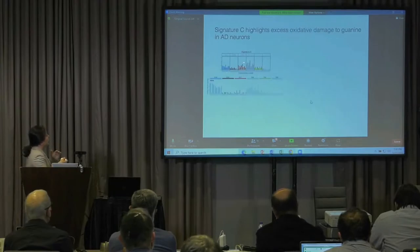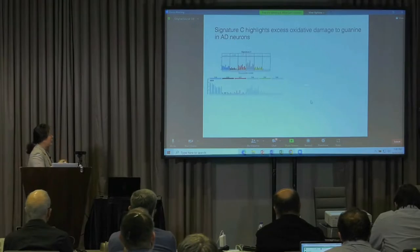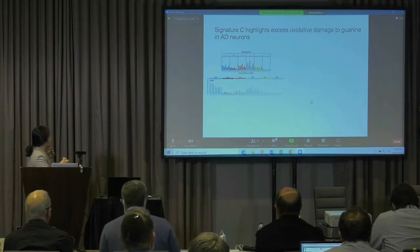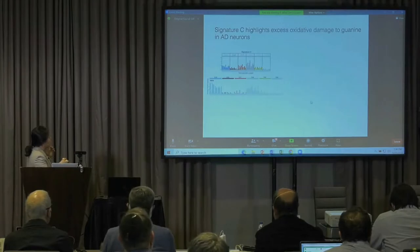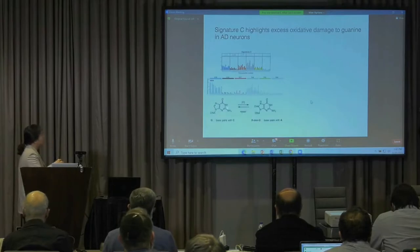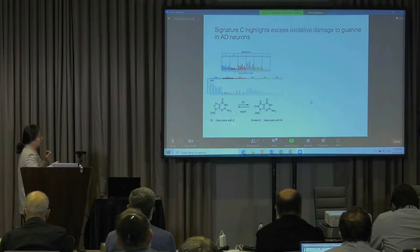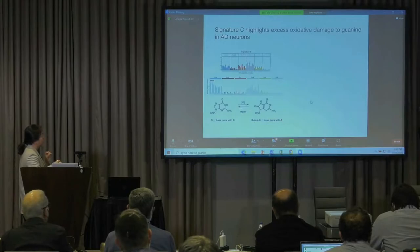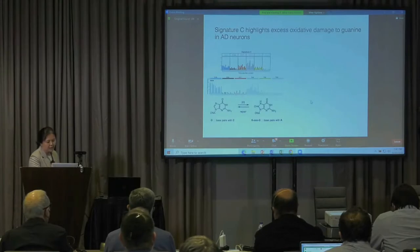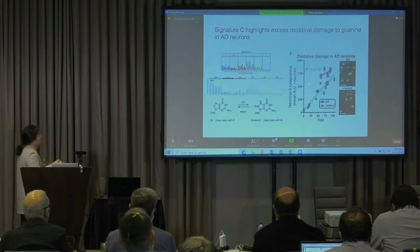Comparing Signature C spectra to recently established cancer signatures, we identified SBS-8 from the COSMIC database as the most similar, showing a very distinct C-to-A enrichment. C-to-A mutations can occur when guanine is oxidized — 8-oxoguanine typically base-pairs with A when there is no proper repair mechanism, causing C to switch to A. We observed many C-to-A mutations in AD brains.